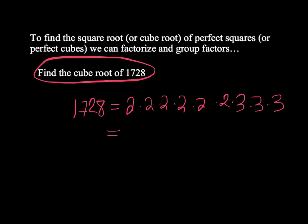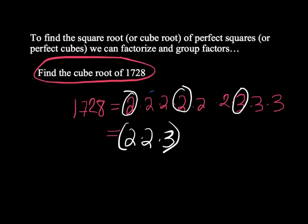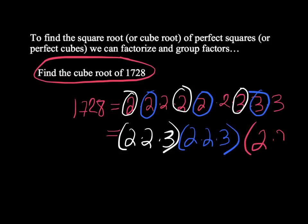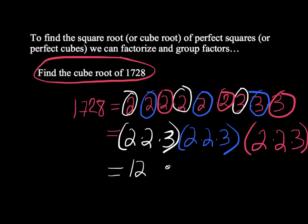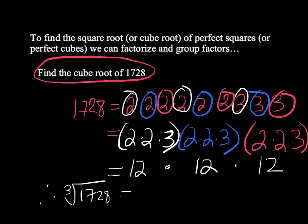Now if we take them and group them into three groups: first, in white, we have 2, 2, and 3 — that's 2 times 2 times 3. In blue, we've got 2, 2, and 3. And finally, the last group is 2, 2, and 3. Now we've gone through all the factors. 2 times 2 times 3 is 12. The other 2 times 2 times 3 is also 12. And the final one is also 12. Therefore, we can conclude that the cube root of 1728 is 12.